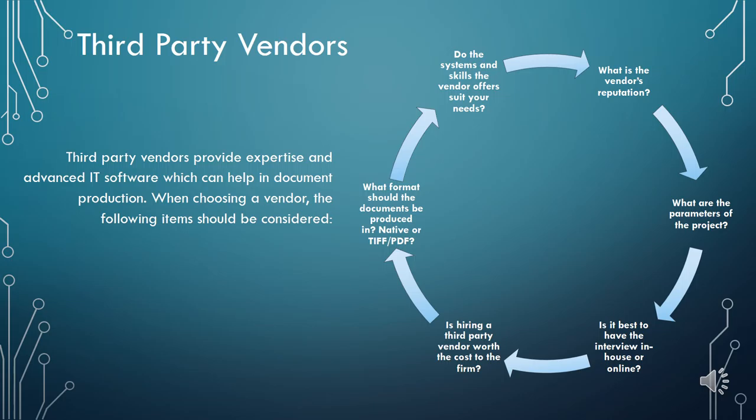When a large number of electronic documents need to be organized for production, a party may consider hiring a third-party vendor. Third-party vendors are companies that coordinate the production of ESI. There are so many companies to choose from — it's important to have a clear understanding of your goals and to find a company with a reputation for handling those specific concerns. While third-party vendors can be expensive, the time saved by delegating to an expert may be well worth it. Here we've profiled some of the main questions to consider when hiring a third party.